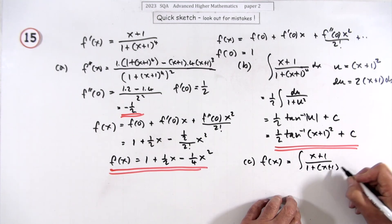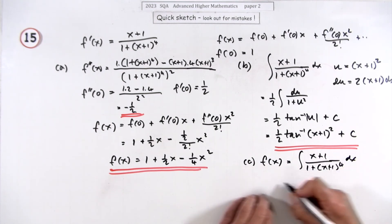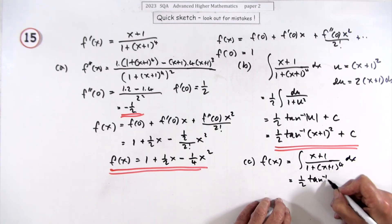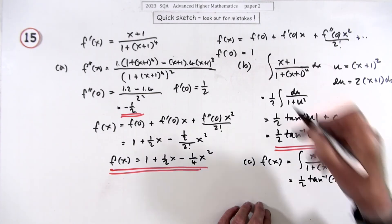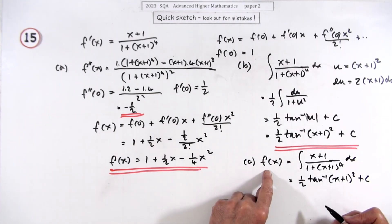f(x) is the integral of (x+1)/(1+(x+1)⁴)dx because that was f'(x). So it will be equal to (1/2)tan⁻¹((x+1)²) + C. And now you can use the initial condition f(0) = 1.